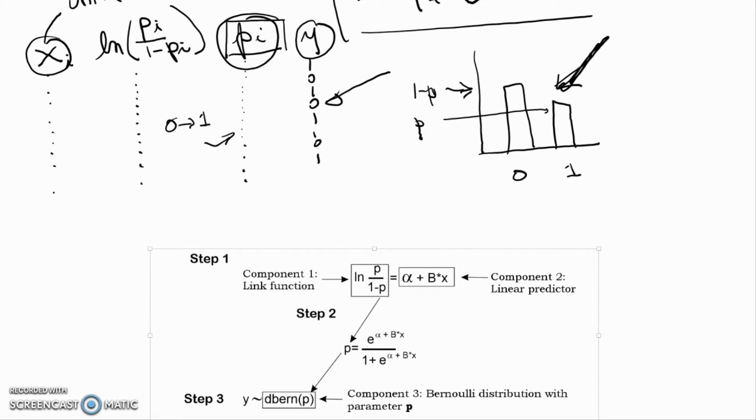To summarize what we've done so far, I want to go back to this data frame that we simulated. I want to go back to that and use it to explain this very important figure from your notes, which identifies the three components of any generalized linear model.